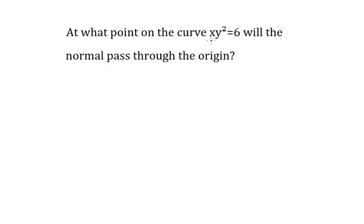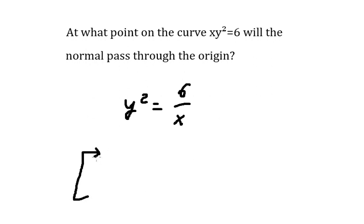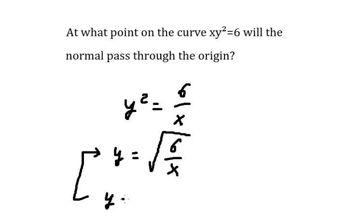The first thing, we need to divide both sides by X. Later, we put the square root on both sides. So we have Y equals the square root of 6 over X, and Y equals the square root of 6 over X with a negative sign.